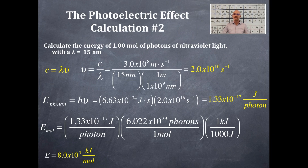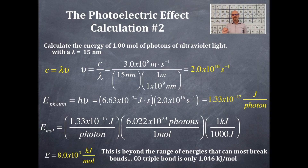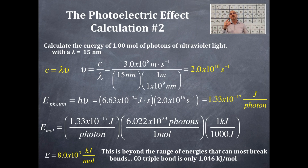Is 8.0×10³ kJ/mol a big number? It is beyond the range of energies that can break most bonds. Carbon monoxide has a triple bond with a bond energy of only 1,046 kJ/mol, and 8,000 kJ/mol is much larger than that. That's why you need to protect yourself from ultraviolet light — wearing long-sleeve shirts, a hat, sunglasses, sunscreen, or an umbrella. UV light is high in energy, it will penetrate you, and it can break bonds.